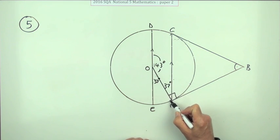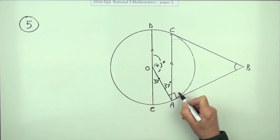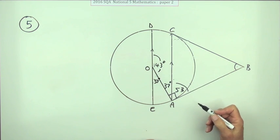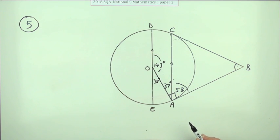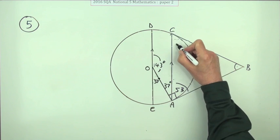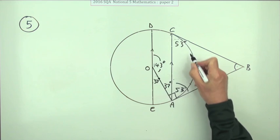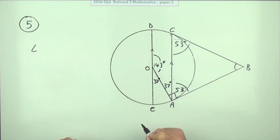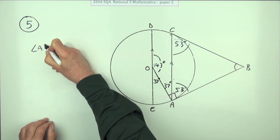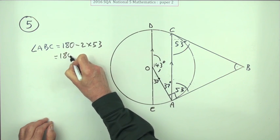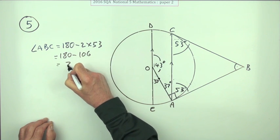The next step: you're on a radius meeting a tangent, so that must be a right angle — the complement of 37 is 53. Now, it's not intuitively obvious, but when you have two tangents meeting a circle it forms an isosceles triangle, because tangents from any external point are equal in length. That makes the other angle 53 as well. Finally, angle ABC equals 180 minus two lots of 53, which is 180 minus 106, giving 74 degrees.